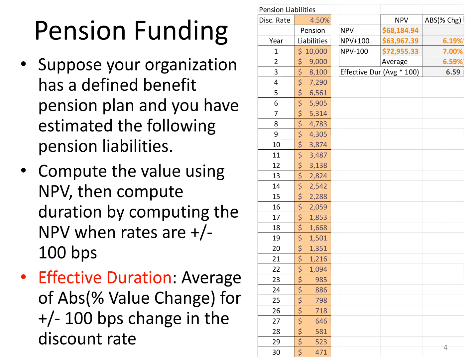Say you're working at a corporation and you have a defined benefit pension plan. You've estimated for all your employees that these will be the cash flows over the next 30 years. These represent a liability for the firm to pay out. The discount rate is 4.5%. We're going to calculate the present value of this liability using the NPV function, and then calculate the duration of these cash flows.